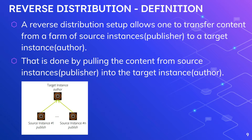What is reverse distribution? A reverse distribution setup allows one to transfer content from source instances — in our case, multiple publishers — to a target instance, which in our case is author. That is done by pulling the content from the source instance into the target instance. So author is going to pull the content from the publishers. As you can see in this diagram, the target instance is author, and there are multiple source instances one to N.